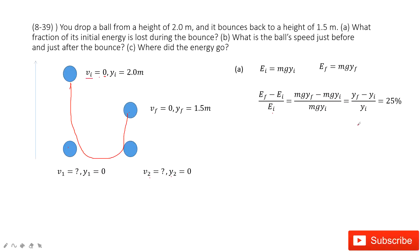Then we need to find the speed of the ball just before and just after it bounces off the ground—V1 and V2. How do we do that?